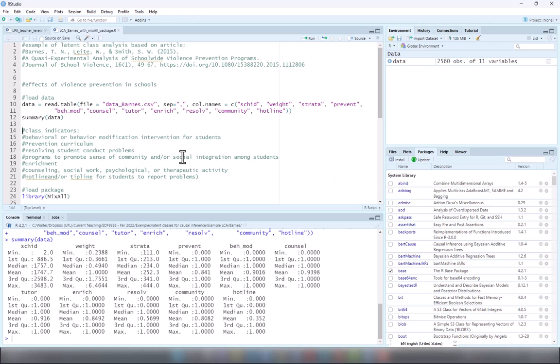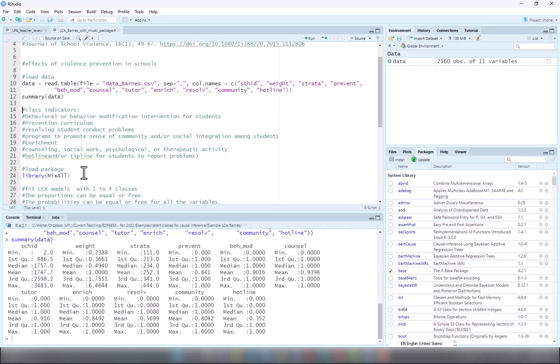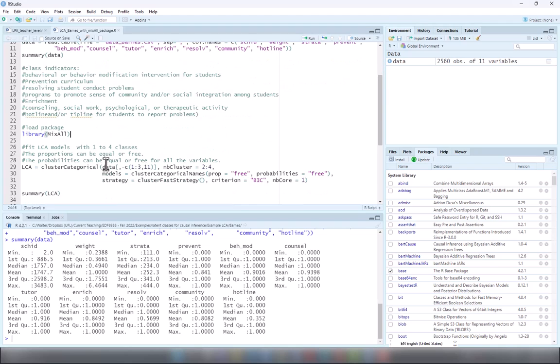There are several packages in R that can fit latent class analysis. Here, I'll use the package Rixow. I like this package for two reasons. One, it can fit latent class models with both categorical indicators and continuous indicators. It will select